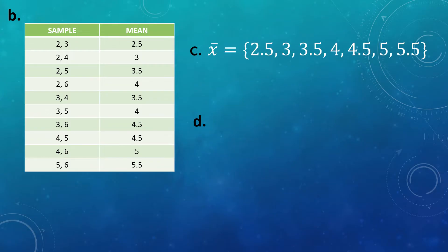After knowing the means, we rewrite them in ascending order. We write x̄ = 2.5, 3, 3.5, 4, 4.5, and 5.5. Why are 3.5, 4, and 4.5 not repeated here in Step C? Because we only write each mean value once.